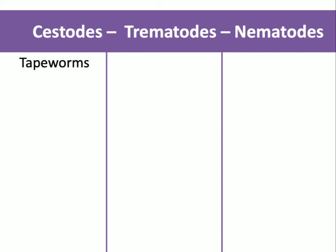The common names for these groups: the cestodes are tapeworms — those are segmented flatworms. The trematodes are flukes — those are non-segmented flatworms. And what's new with the nematodes is that they are roundworms; they are not flatworms.